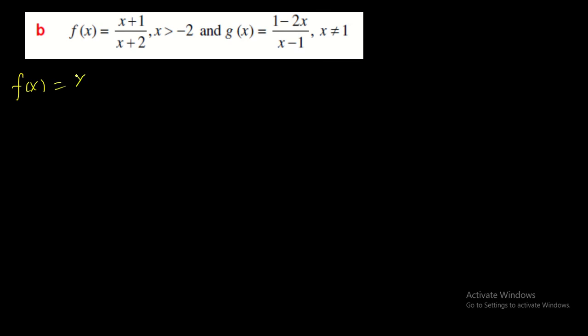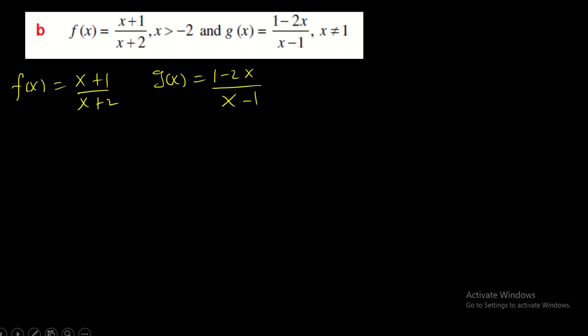Next example: f(x) = (x + 1)/(x + 2) with domain x > -2, and g(x) = (1 - 2x)/(x - 1) with domain x ≠ 1. We are asked to check whether they are inverses of each other. We apply Definition 1.3 and check if f ∘ g gives x.